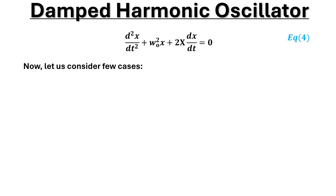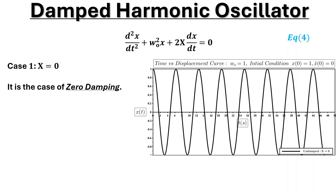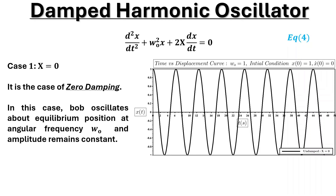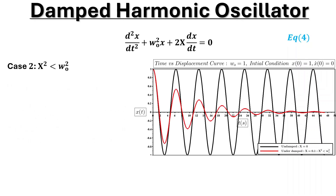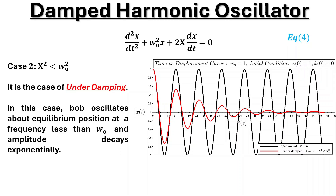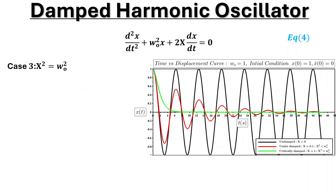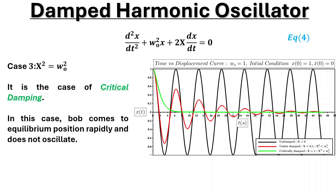Now let us consider a few cases. Case 1: when γ equals 0. This is the case of zero damping. In this case, the bob oscillates about the equilibrium position at angular frequency ω₀. Case 2: when γ² is less than ω₀². The bob oscillates about the equilibrium position at a frequency less than ω₀ and amplitude decays exponentially. Case 3: when γ² equals ω₀². This is the case of critical damping. In this case, the bob comes to the equilibrium position rapidly and does not oscillate.